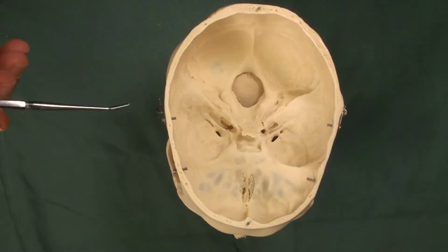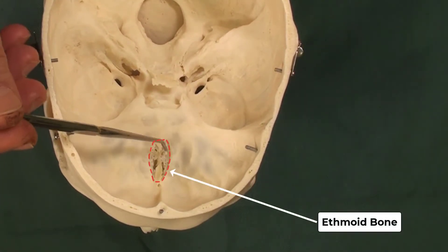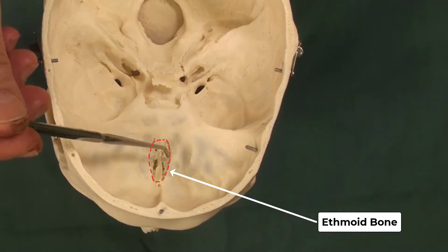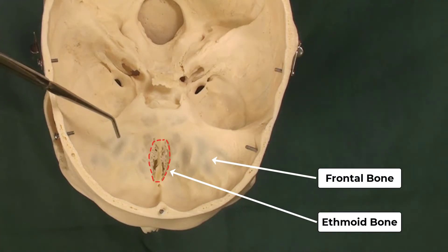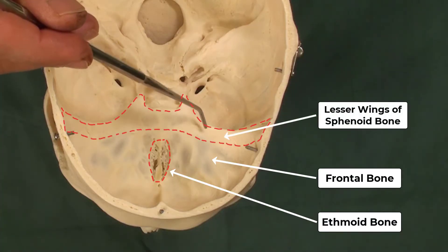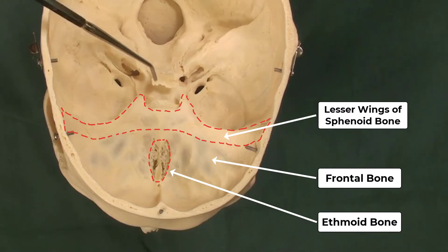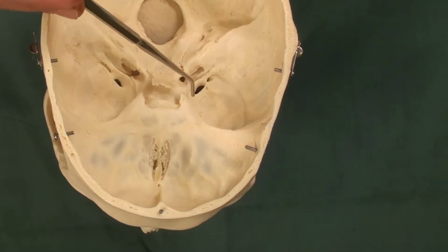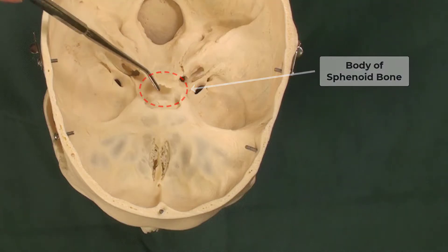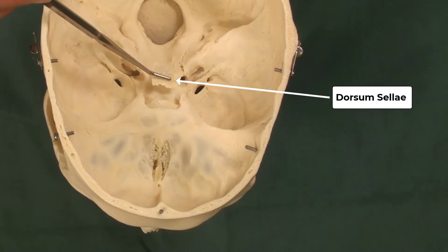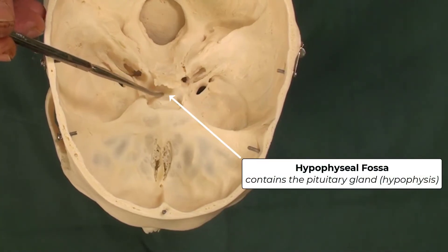First, we want to look at the bones here. The ethmoid bone is in the right anterior part of the skull. Then we have the part of the frontal bone and the lesser wing of the sphenoid bone. Moving backward, we have the rest of the sphenoid bone — the body of the sphenoid bone, the dorsum sellae, and the hypophysial fossa in the middle.